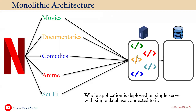A single code base means the entire application is written as a single unit of code, which includes the user interface code, business logic code, and the data access layer. It is a centralized deployment — the application is deployed as a whole single unit. If you want to make any changes, the entire application has to be redeployed again, which is one disadvantage of monolithic architecture.